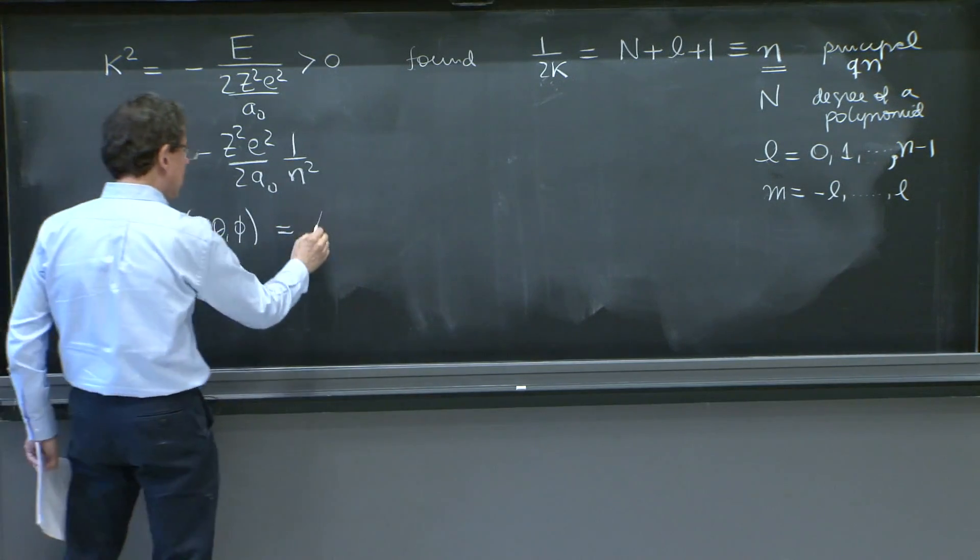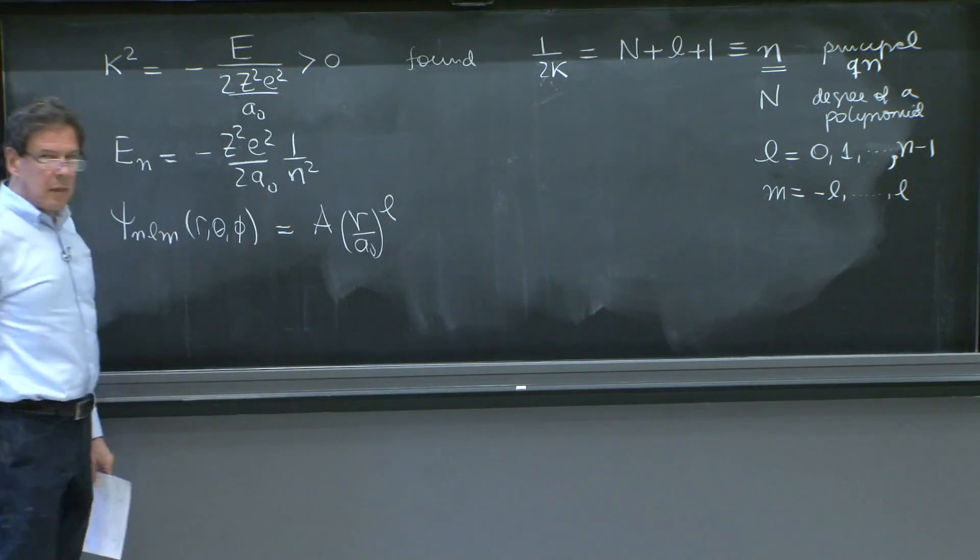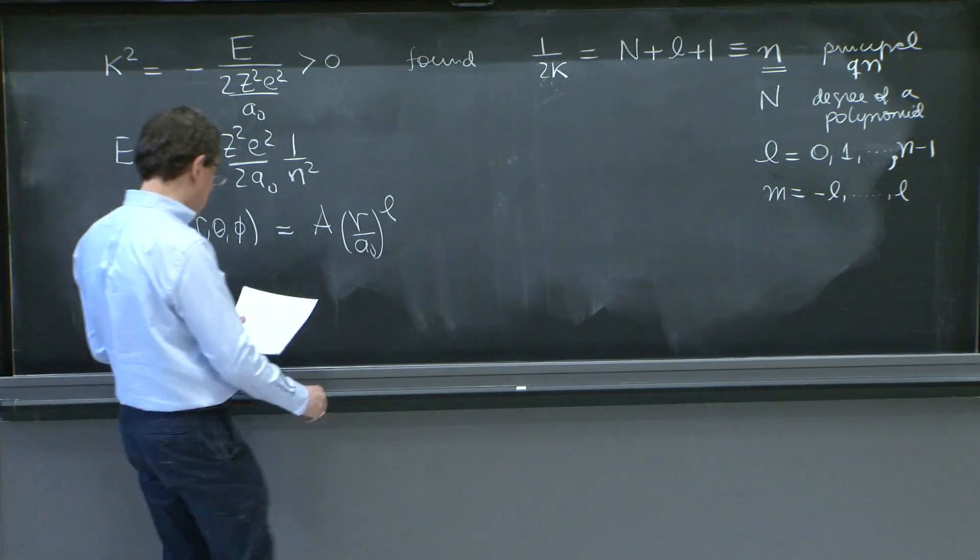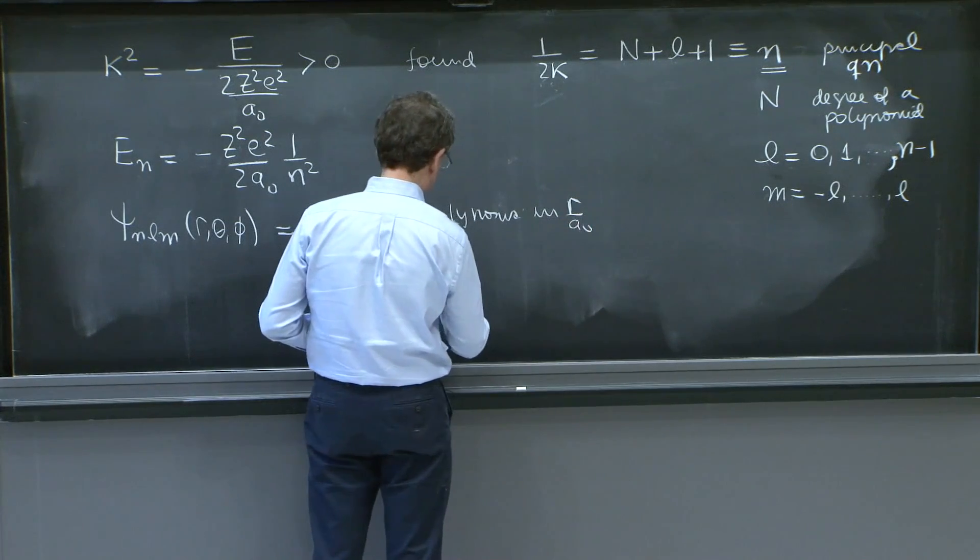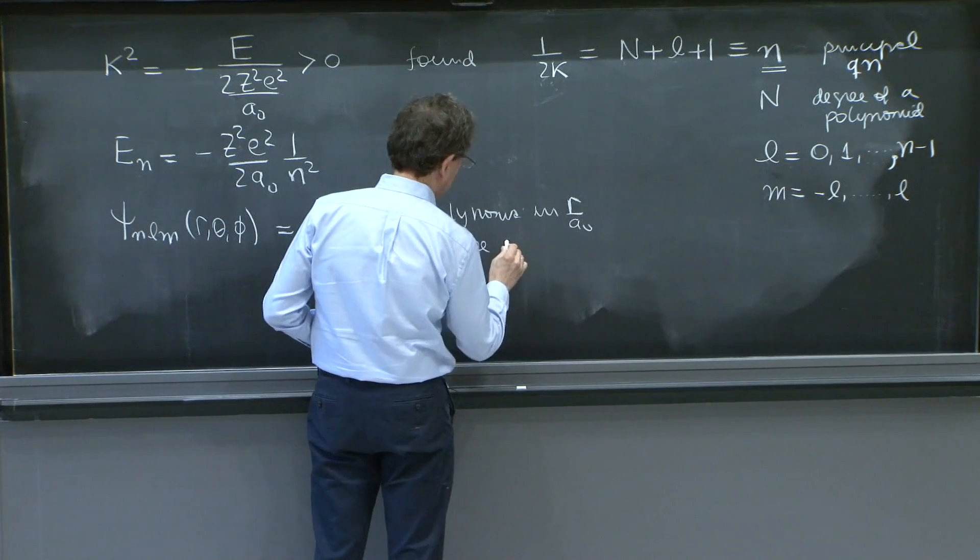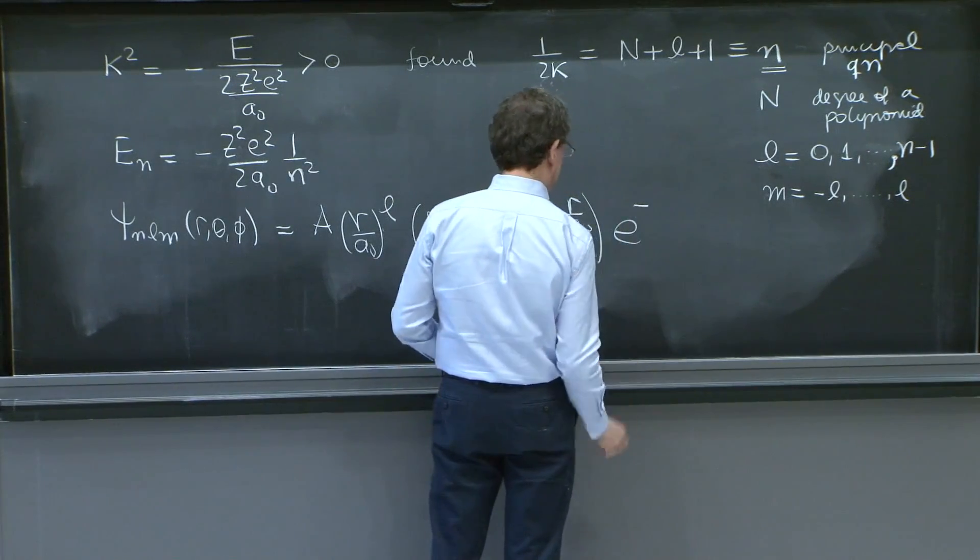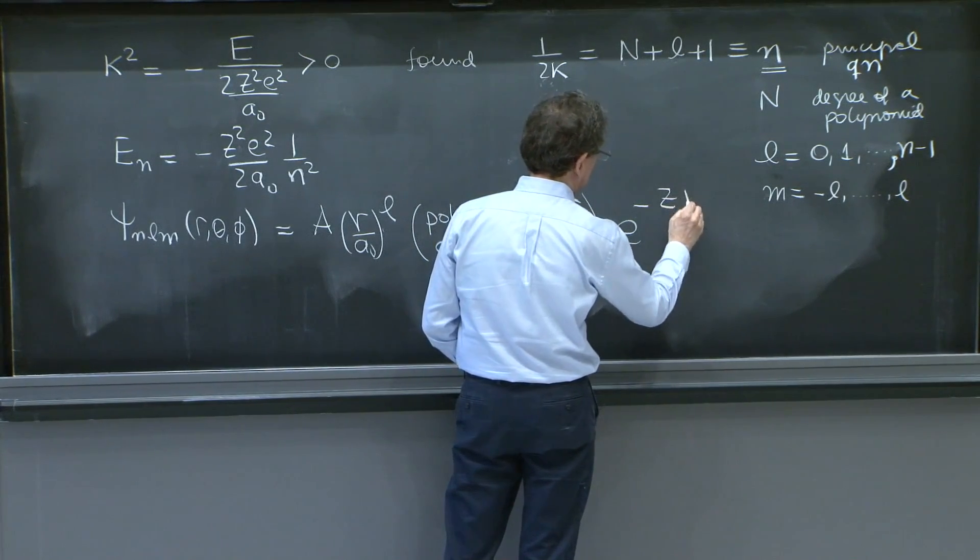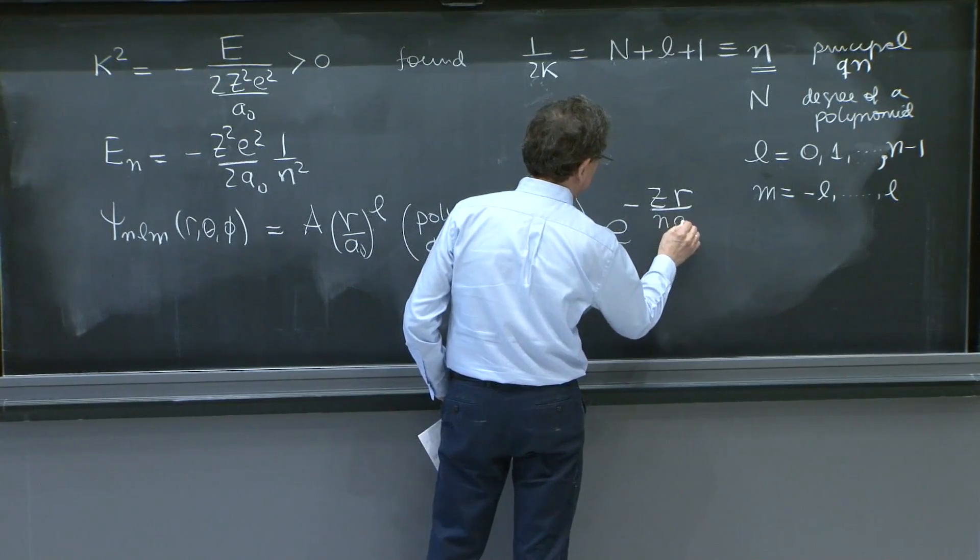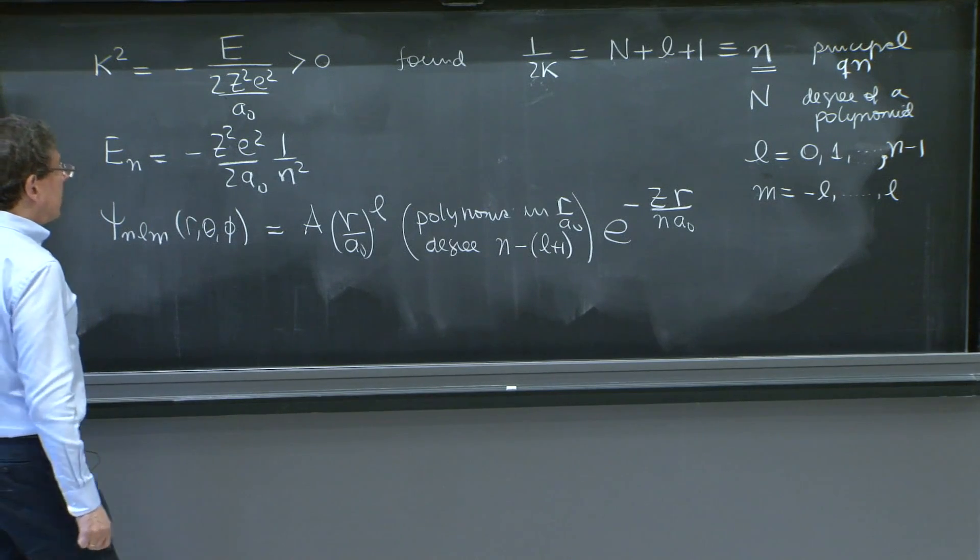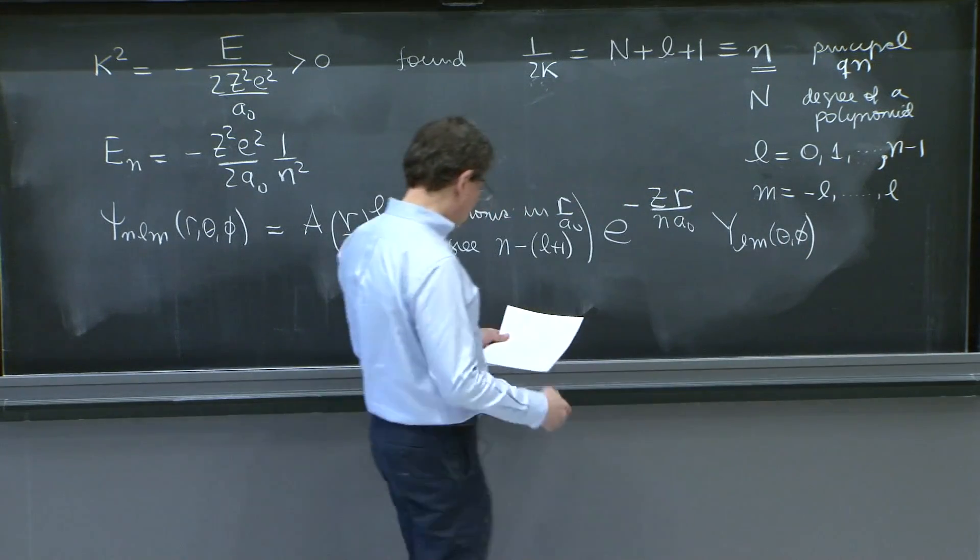They were of the form of a normalization constant, an r to the l that you can isolate. That's the behavior for small r. Then a polynomial in r over a0 of degree, which is capital N, which is n minus l minus 1, times an exponential decay with radius, which goes like z over r. It has to be dimensionless, the argument inside the exponential. And it turns out to depend on a0, in fact, n a0. And finally, the spherical harmonic.